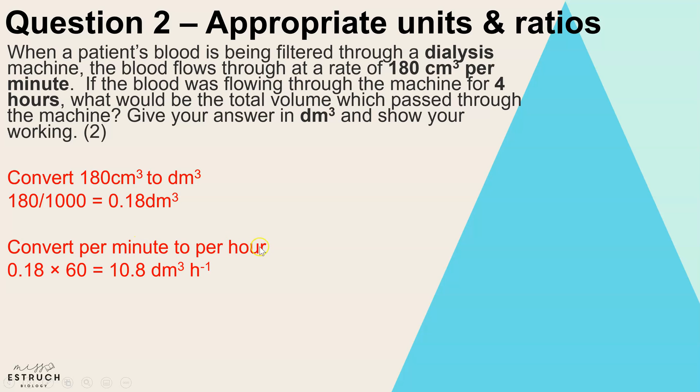Now the next thing is we've been told that that is the volume of blood per minute. However, the machine is running for four hours, so I'm also going to do another conversion here. I'm going to convert the minutes to hours. So we know that we have 0.18 decimeters cubed in one minute. To work out how many we'd have in an hour, we multiply by 60 because if that's for one minute, 60 minutes in an hour, times it by 60.